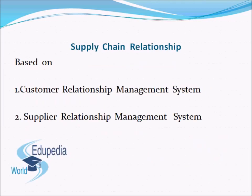Supply chain relationships are based on two factors. Number one is the customer relationship management (CRM) system, and number two is the supplier relationship management (SRM) system. CRM is focused on the customer and the manufacturer and is a B2C organizational concept, whereas SRM is focused on the supplier and the manufacturer and is a B2B organizational concept.